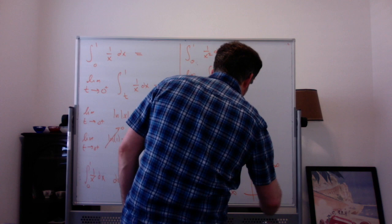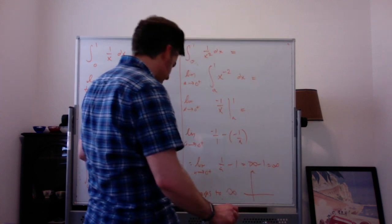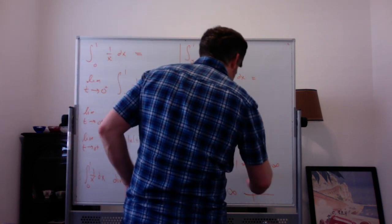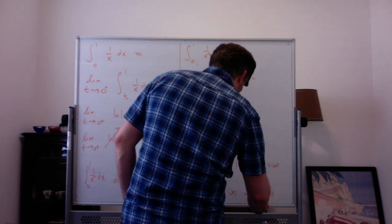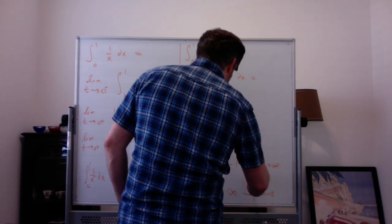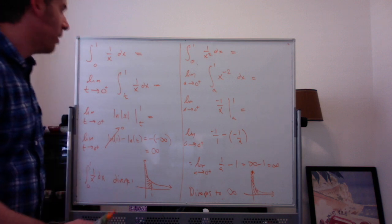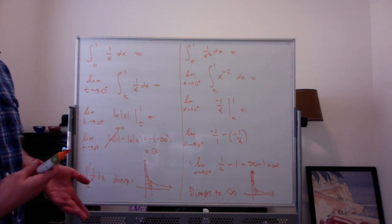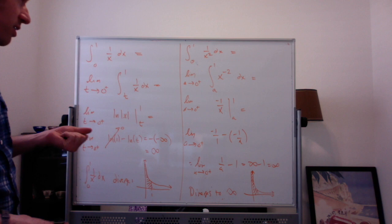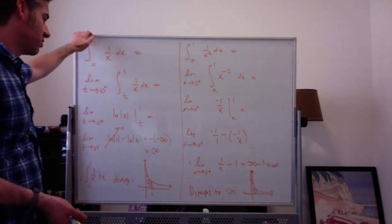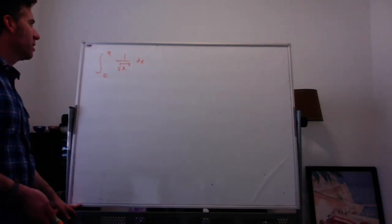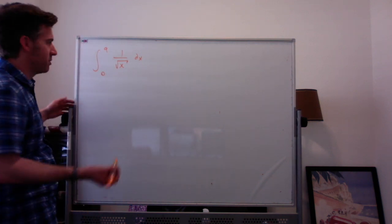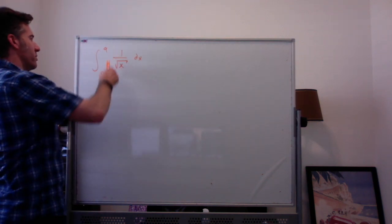So this integral also diverges to infinity. This kind of makes sense because if you think about the graph, 1 over x squared is a little bit steeper than 1 over x, but still the same kind of behavior — the area ends up being infinite. So what kind of integrals do converge when you have an undefined point within or at a limit of integration? Here's an example: the integral from 0 to 9 of 1 over the square root of x.